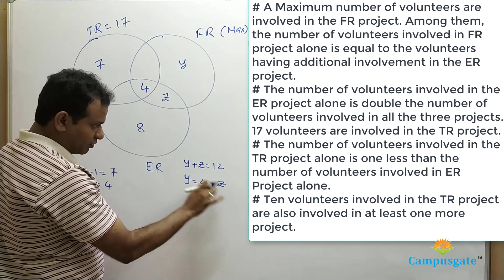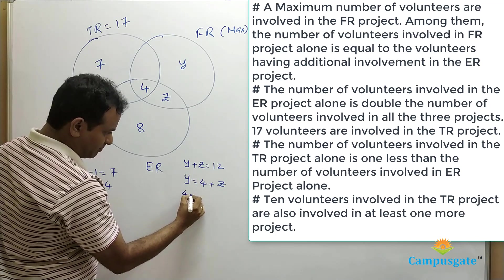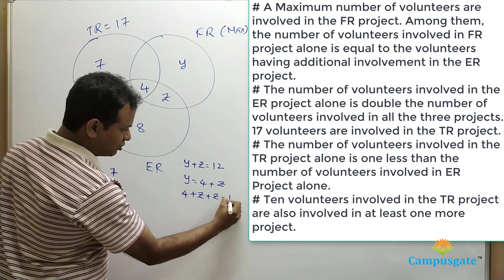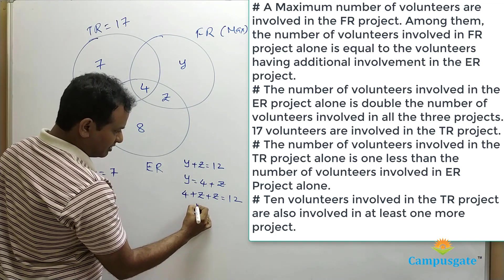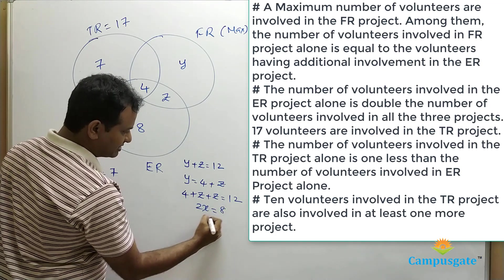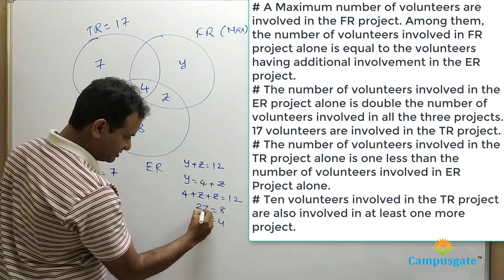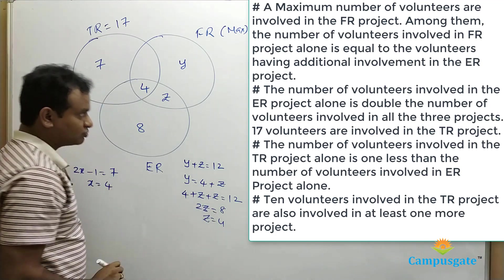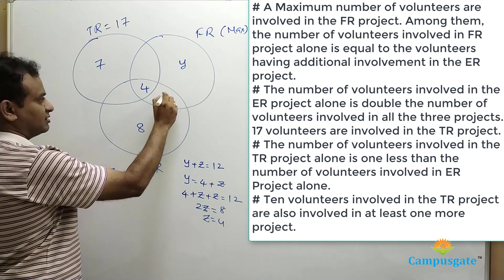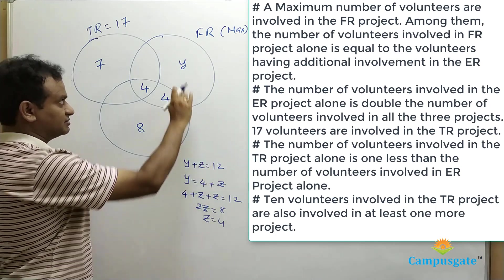Substituting Y = 4 + Z into Y + Z = 12 gives: 4 + Z + Z = 12, so 2Z = 8, therefore Z = 4. If Z equals 4, then Y equals 8. So the FR-only region is 8.